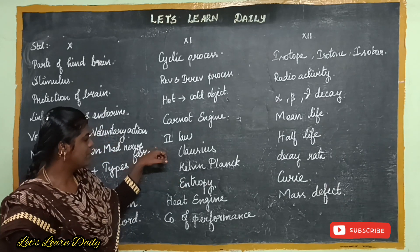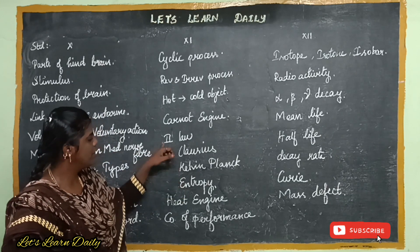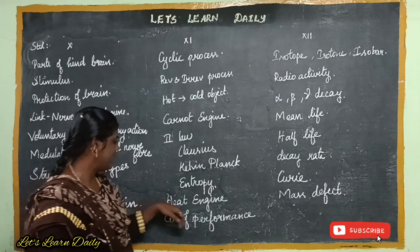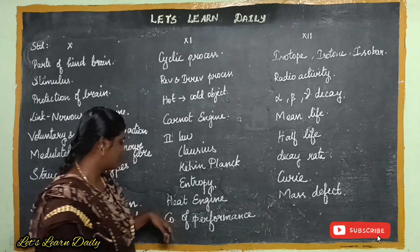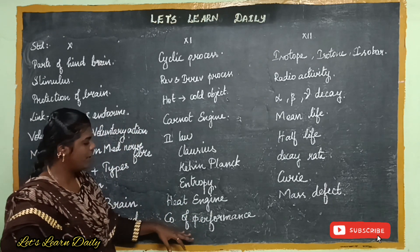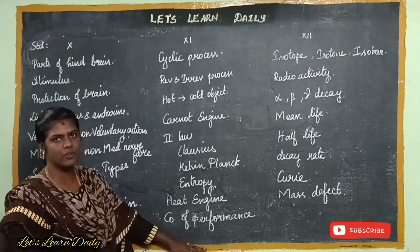And second law of thermodynamics in terms of entropy. Next, what is a heat engine? And what is the coefficient of performance? What is the difference between the two? But it is related to the same situation.